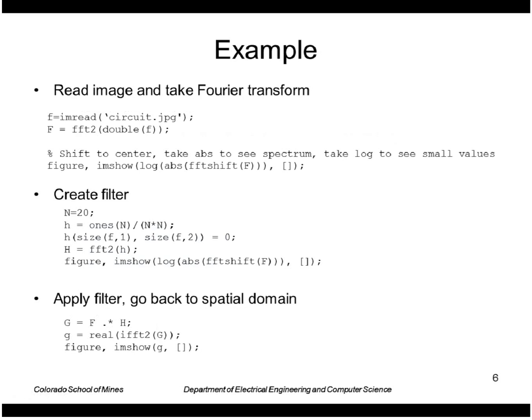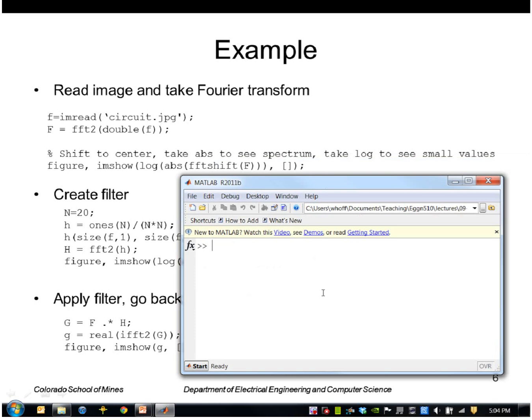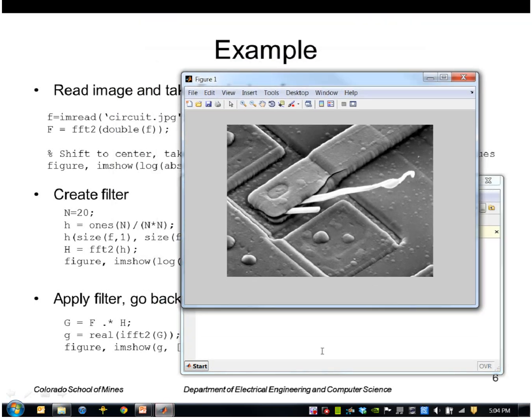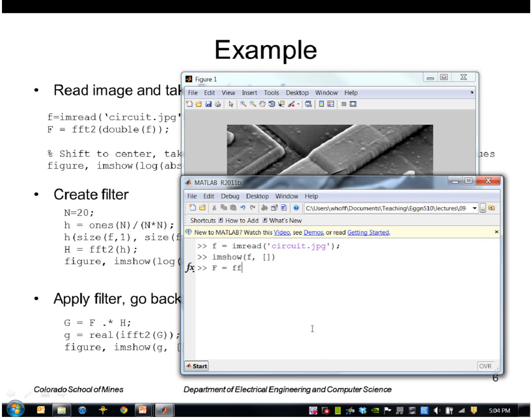Let's do an example of filtering in the frequency domain. Let's take an image, I'll call it F. We'll go ahead and take the Fourier transform using MATLAB's FFT2. We want to work with double precision, so that gives us a transform that is the same size as the original image but of type complex.